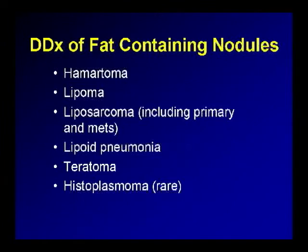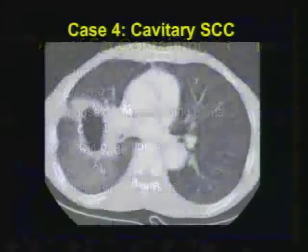Fat-containing masses: hamartomas, lipomas, rarely liposarcomas. Remember, liposarcomas are often very aggressive and may not have any visible fat within them. Lipoid pneumonia, teratomas, and histoplasmomas can also have internal fat. But usually when you see internal fat, you're thinking hamartoma — and if that's what you say, the vast majority of the time you'll be correct.